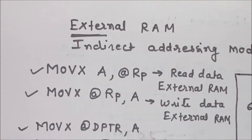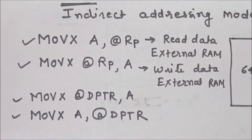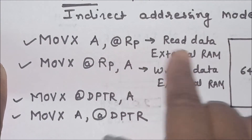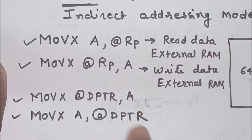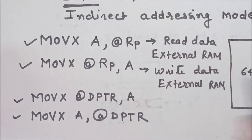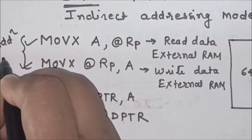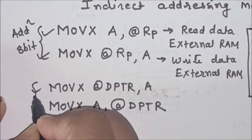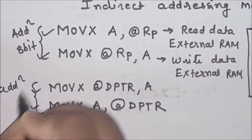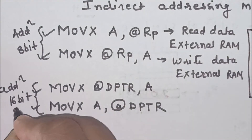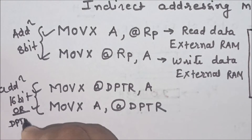So four types of instructions only can be used for external RAM. One uses R0 or R1 register as a pointer to read data, and another to write data. When the external RAM address is 8-bit, you can use R0 or R1 as a pointer. If the address is 16-bit, then you use the DPTR register. We will take an example to understand this instruction in detail.